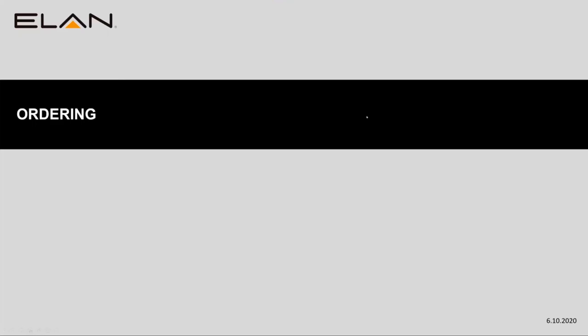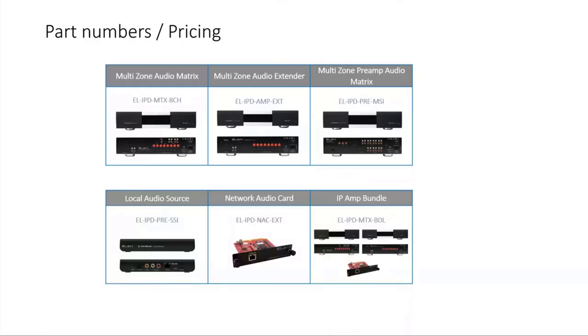Just to note, the examples only went up to two chassis but that's certainly not the limit. For ordering, please reach out to your local RSM for pricing. The part numbers are visible here — take a snapshot. We haven't mentioned the IP AMP bundle, which is a bundled kit that includes the multi-zone audio matrix, the multi-zone audio extender, and the network card at a price discount compared to buying all three separately. It gives you the functionality of an S1616 in one bundle under one part number, shipping in separate boxes.